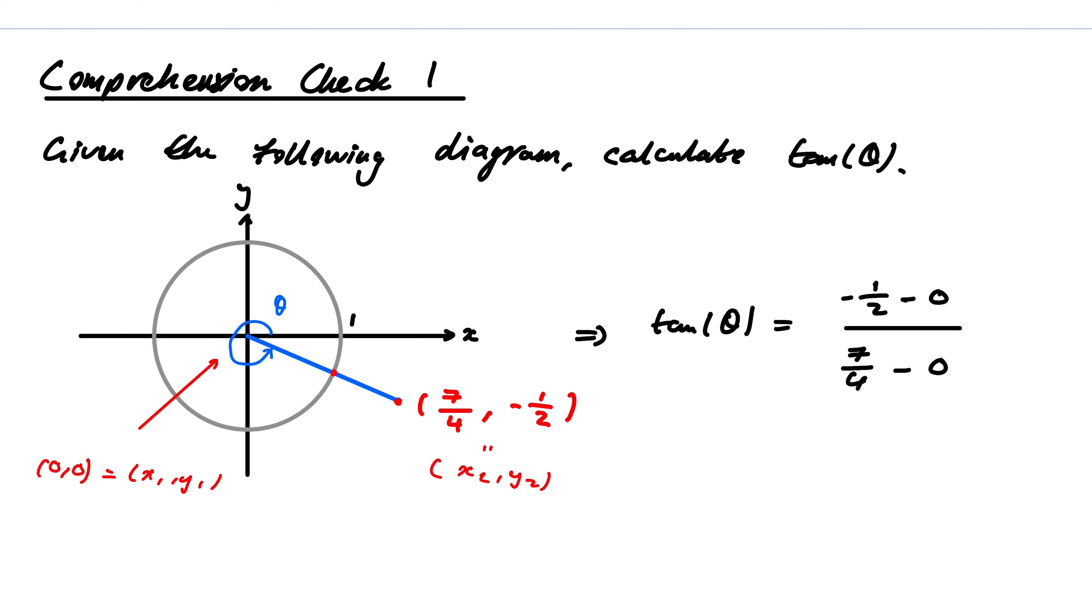What does this give me? Well, it's minus 1 half divided by 7 over 4. So this is minus 1 half multiplied by 4 over 7. That would be 4 divided by 14. I can factor out a factor of 2. This would be minus 2 divided by 7.